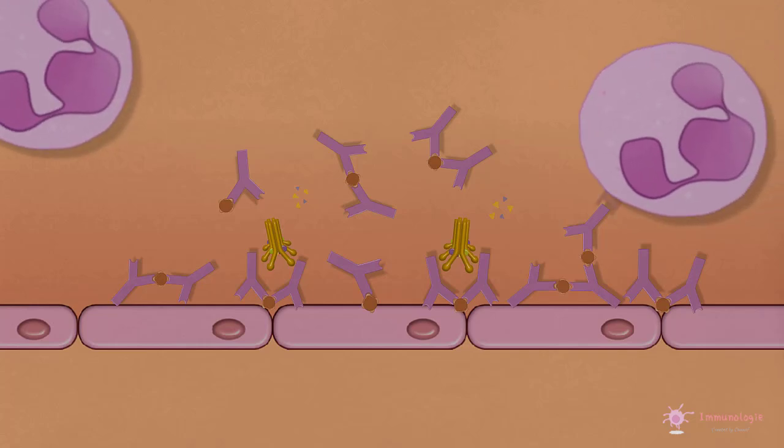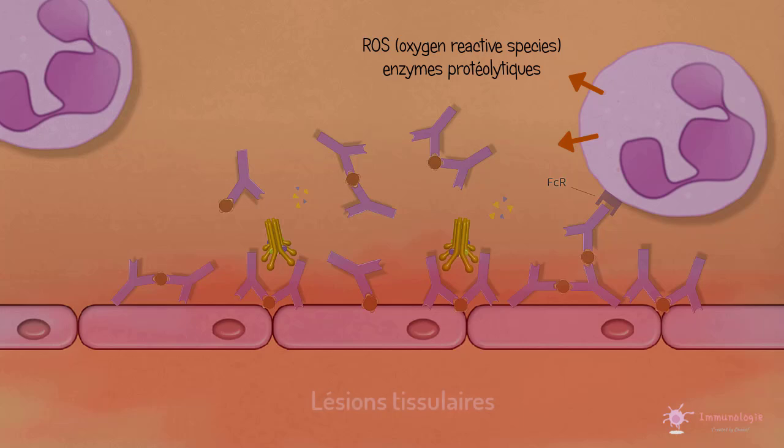Lorsque les leucocytes sont activés au niveau des sites de dépôt via des récepteurs Fc, ces cellules produisent des substances, notamment des radicaux oxygénés et des protéases, qui endommagent les tissus adjacents.